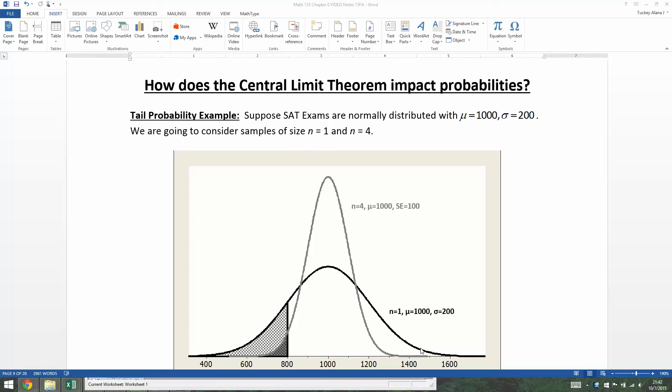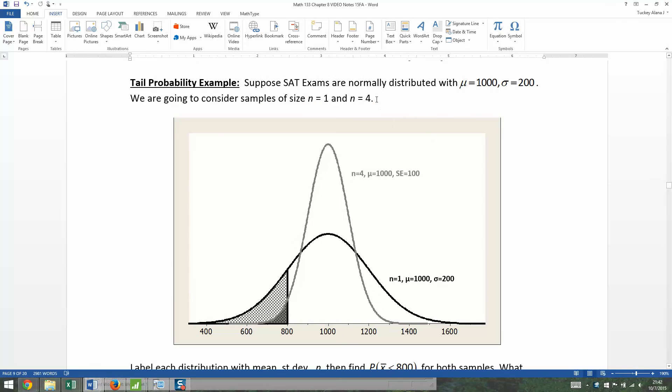Suppose SAT exams are normally distributed with a mu of 1,000 and a sigma of 200. We are going to consider samples of size n equals 1 and n equals 4. This is pretty commonplace—SAT exams, big exams like that are often normalized. That means that they design them so that they create a normal distribution. Most people score around 1,000. Very few people score up here at the high end or the very low end.